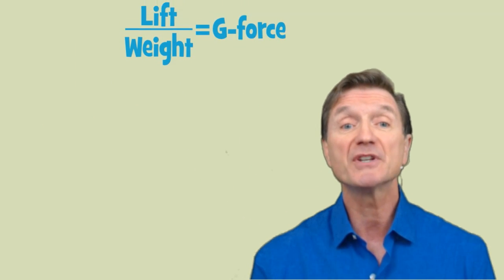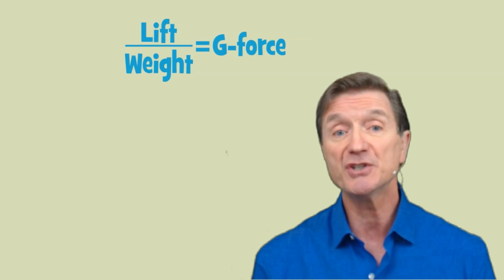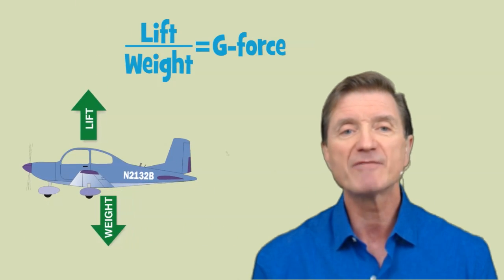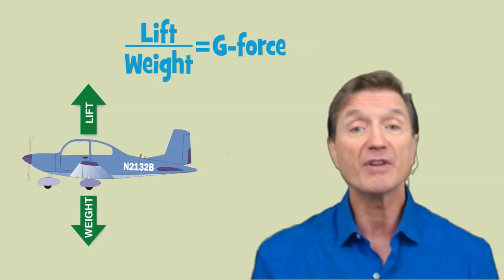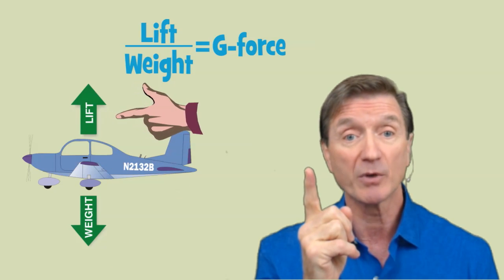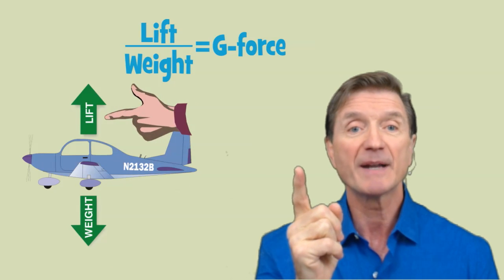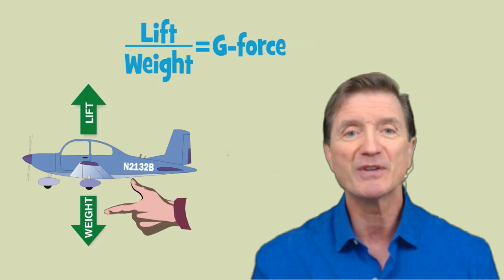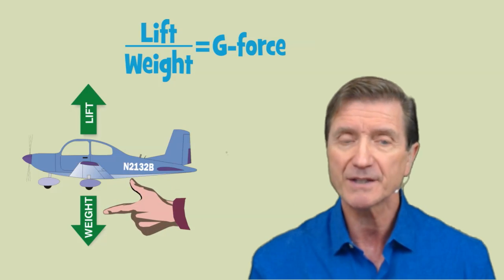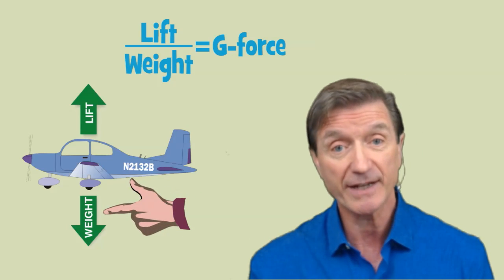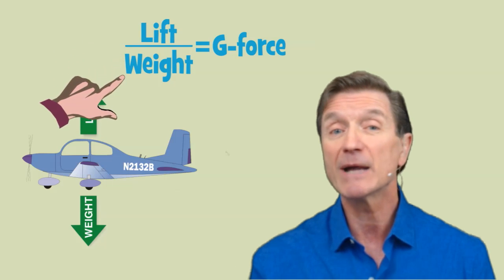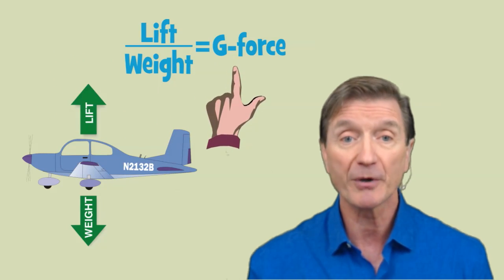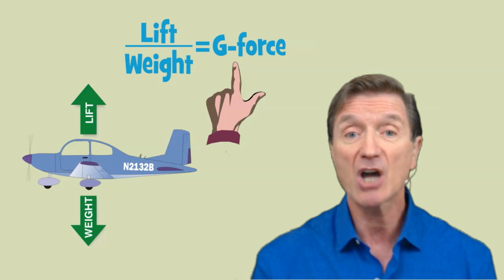In our previous video, we learned that the g-force experienced by the airplane is derived by the ratio of all the upward acting forces on the airplane — which we'll call lift — divided by all the downward acting forces on the airplane, which we'll call weight. Simply stated, lift divided by weight gives us the g-force experienced by the airplane and its contents.